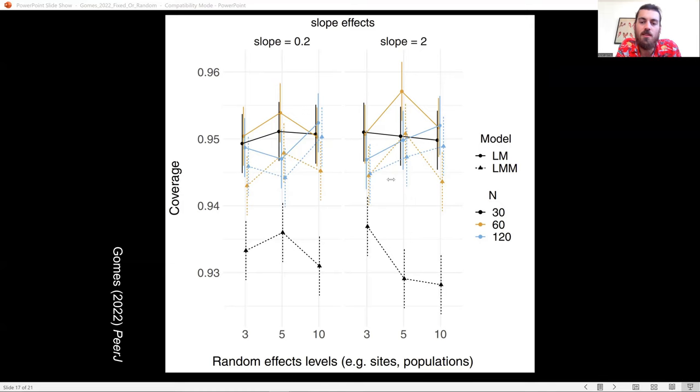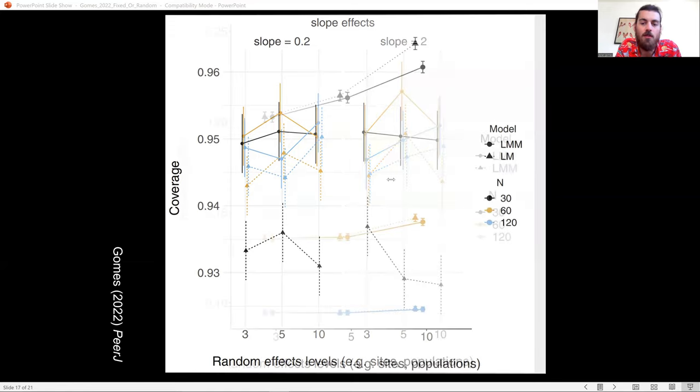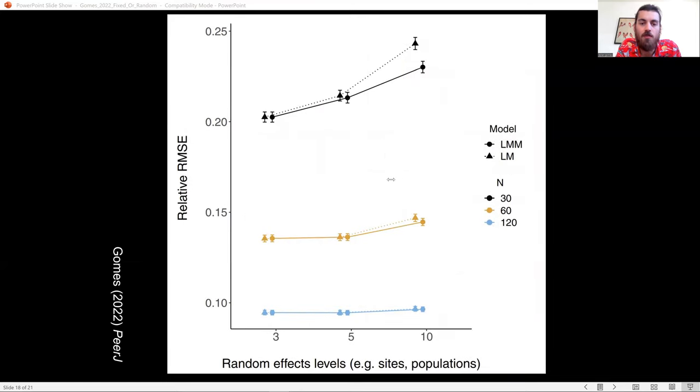And what we see is that in nearly all situations, coverage is around the expected 0.95, with the only exception being when random effects were used with small sample sizes, so n equals 30. And this was regardless of the number of levels of random effects used.